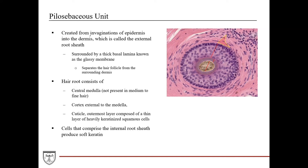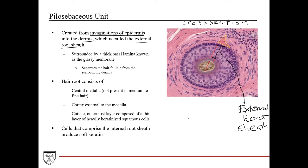The pylosebaceous unit is created from invaginations of the epidermis into the dermis, and this is called the external root sheath. In a cross-section of a hair follicle, the layer indicated by the red line in the slide is the external root sheath. It's several layers deep of keratinocytes, and it's continuous with the stratum basale and the stratum spinosum layer of the epidermis, representing the continuation or invagination of the epidermis layer of the skin.